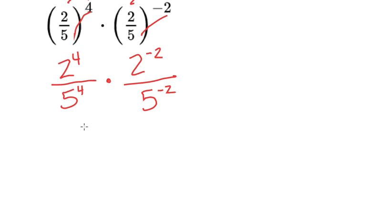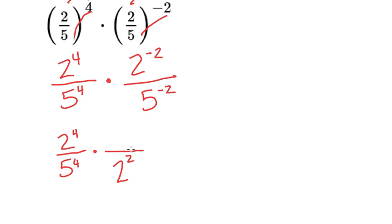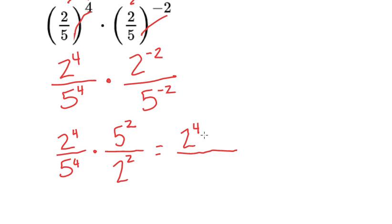When we go to keep solving, there's nothing wrong with 2 to the 4th over 5 to the 4th — we're going to keep it as is. We're multiplying that, and some of you are noticing you can't have negatives. So I need to take this 2 to the negative 2nd and move it to the denominator, making it 2 to the positive 2nd. And I need to take this 5 to the negative 2nd and put it in the numerator, making it 5 to the positive 2nd. Because these each had the same negative exponent, they flipped and now they're both positive. So continuing to simplify: 2 to the 4th times 5 squared in the numerator, and in the denominator that's 2 squared over 5 to the 4th.